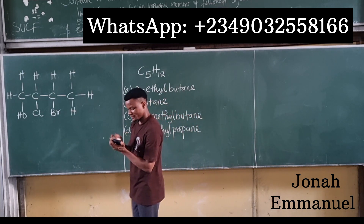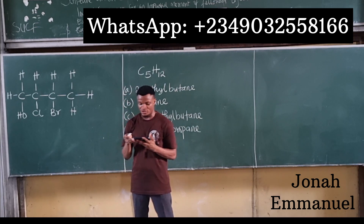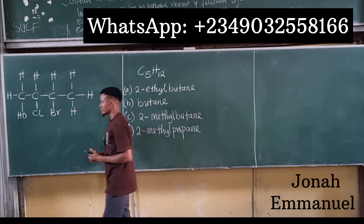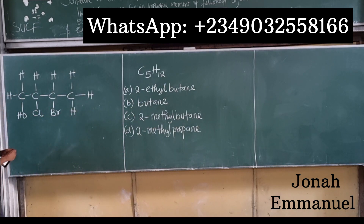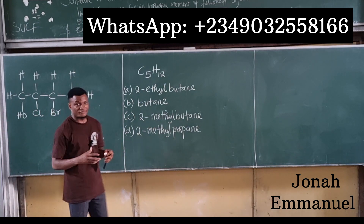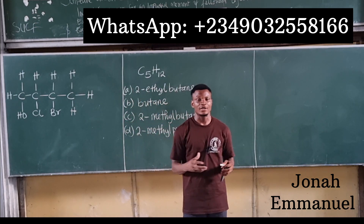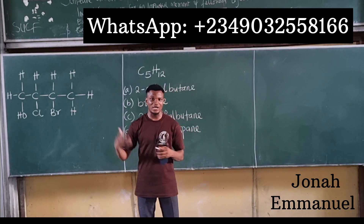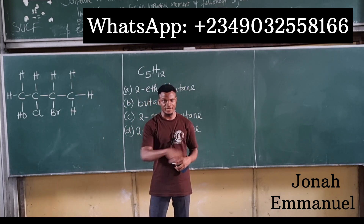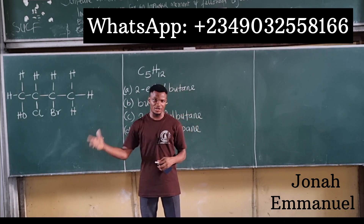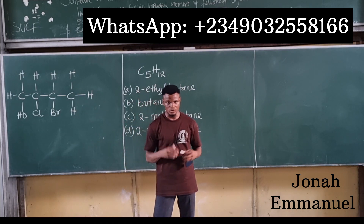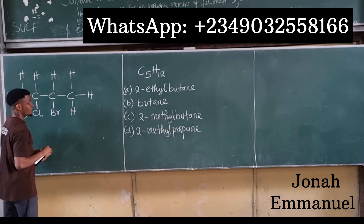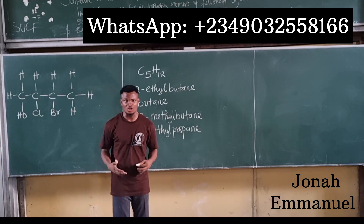The first question asks for the IUPAC nomenclature of a compound. When it comes to naming organic compounds, the first thing you do is count the longest continuous carbon chain, which for this case would be one, two, three, four.